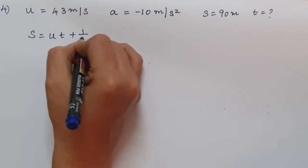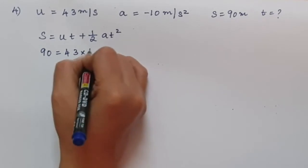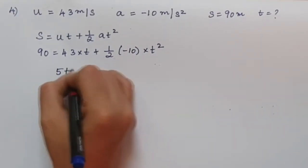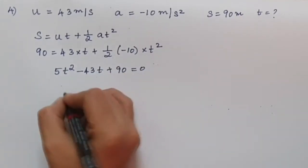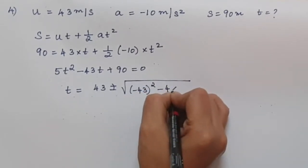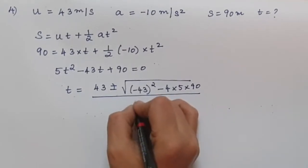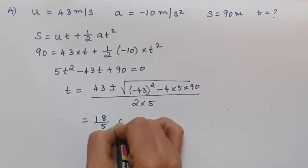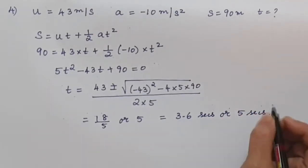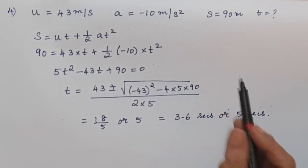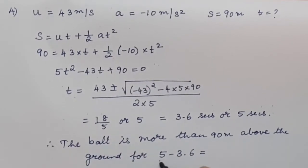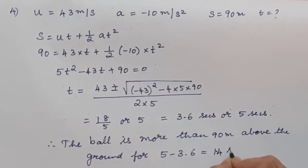Using s = ut + ½at²: 90 = 43t + ½ × (−10) × t². Simplifying gives 5t² − 43t + 90 = 0. Using the quadratic formula, we get t = 3.6 seconds or t = 5 seconds. The ball reaches 90 metres on the way up at 3.6 seconds, goes above 90 metres, then returns to 90 metres at 5 seconds. Therefore, the ball is more than 90 metres above the ground for 5 − 3.6 = 1.4 seconds.